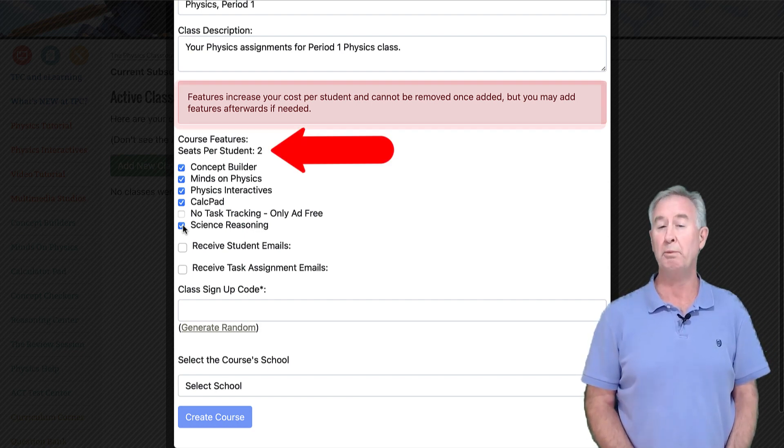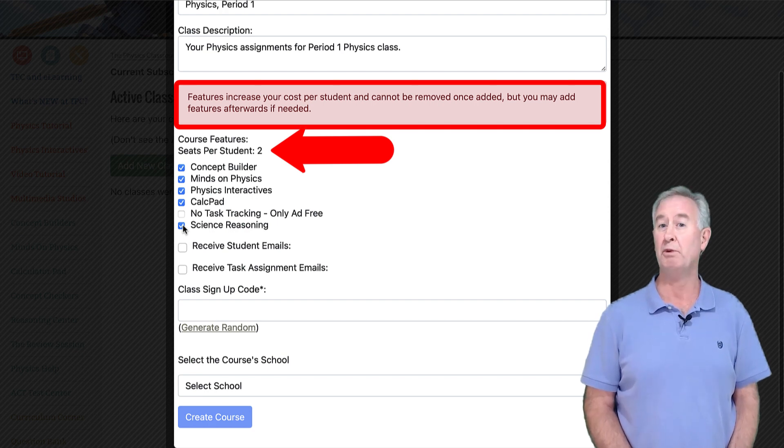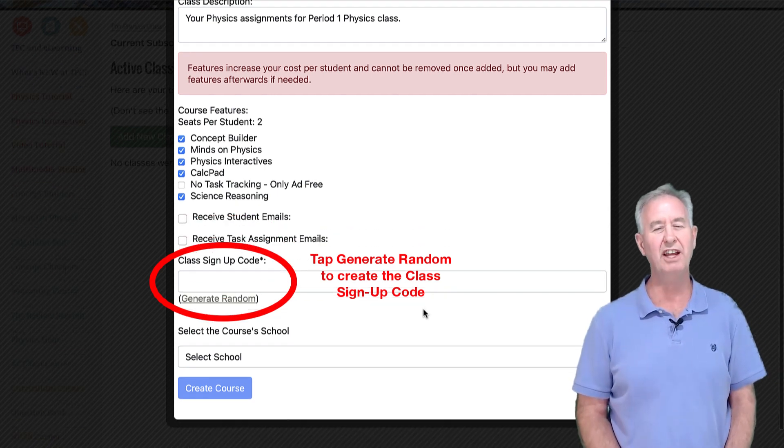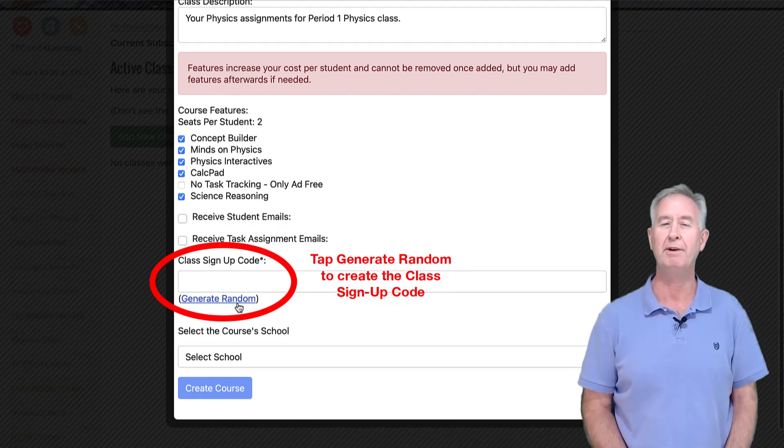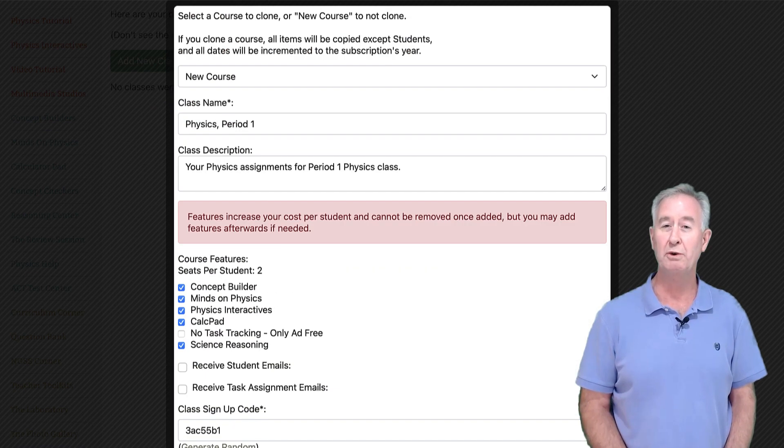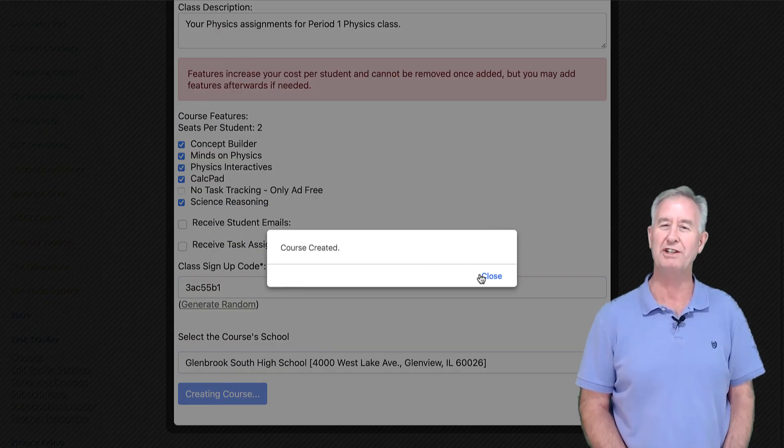Once you go past this point, you cannot remove features, but you can always come back later and add features if you wish to. So make sure you're certain before you go forward. From the school menu, select your school. It's a lengthy list, so just type your name and it will self-select itself. Then click on the Add New Course button and your course is created.